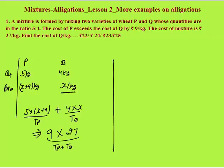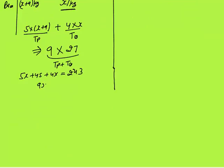Total weight is 5 kg plus 4 kg = 9 kg, and average cost of total weight is 27. So total cost: you can solve this as 5X plus 45 plus 4X equals 9 into 27. 9 into 27 is 243. So you will get 9X equals 243 minus 45. You will get X equals 27 minus 5, that is 22.